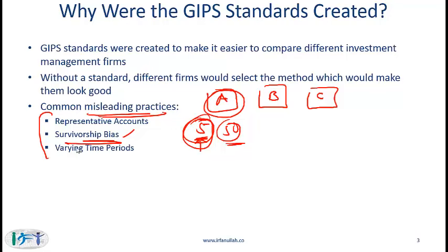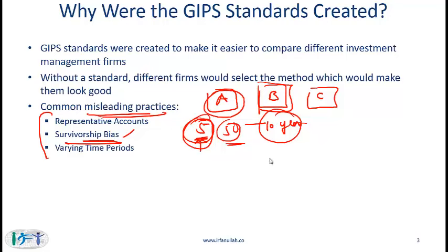Another incorrect practice is survivorship bias, a concept seen in other parts of the curriculum. Firm B presents performance numbers over the last 10 years but only considers clients or portfolios that are active today. Clients who left the firm over that period are excluded — and those clients possibly left because performance was poor. Omitting them causes the reported performance numbers to be overstated.